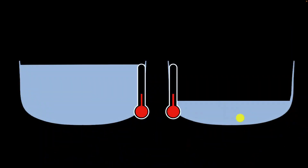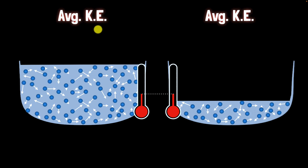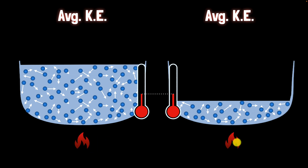Here are the two vessels of water and they're initially at the same temperature — room temperature. The first big question for us is: what exactly is temperature? Temperature is a measure of the average kinetic energy of the molecules. Since initially the temperature is the same, on average they have the same kinetic energy. Now let's heat them up. Since we're using similar burners, if we wait for some time we're going to provide the same amount of thermal energy.